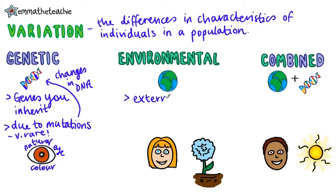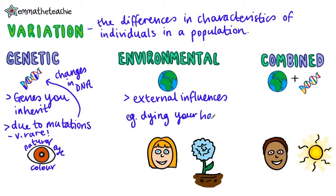Variation can also be caused by your environment. This means any external influences that are changing your characteristics. For example, just dyeing your hair changes the colour of it. Another example are hydrangea flowers. If the plant is in acidic soil, the flowers will be blue. But if it's put in alkaline soil, the flowers change to pink.